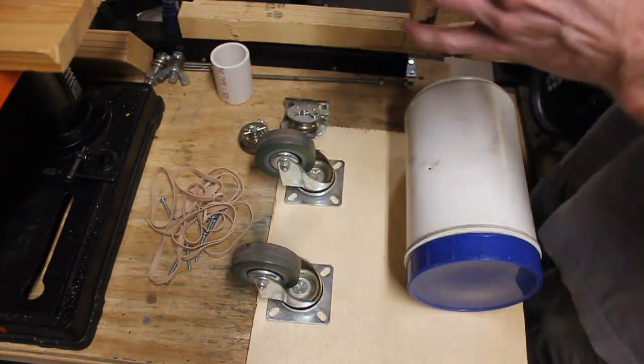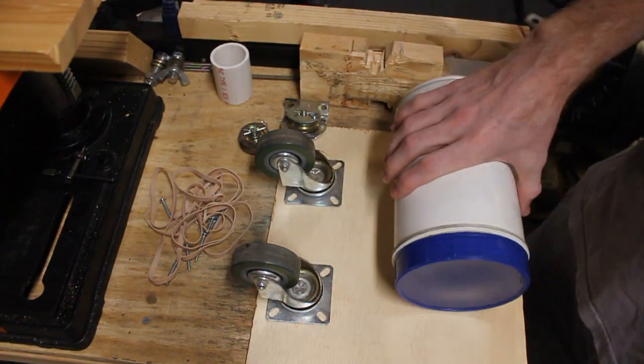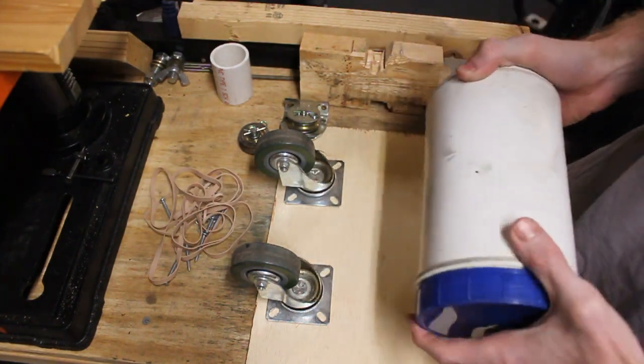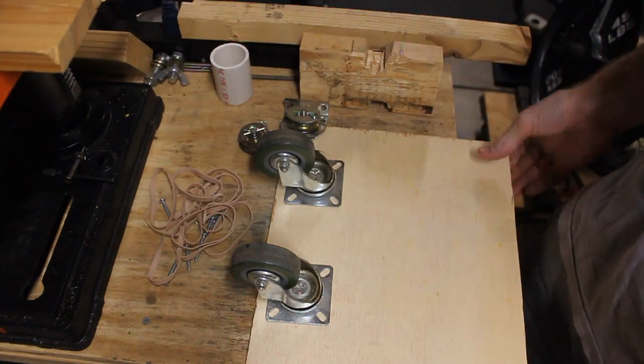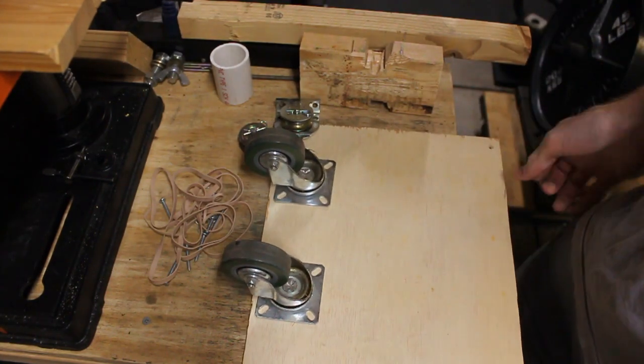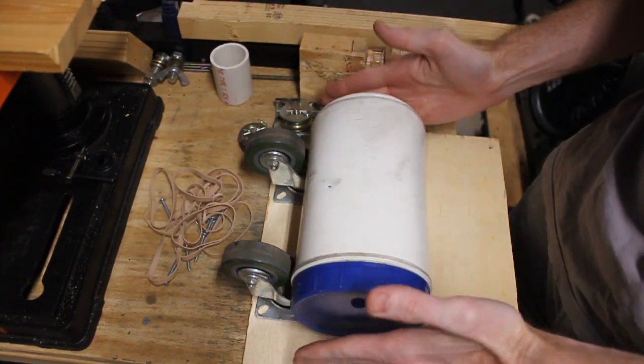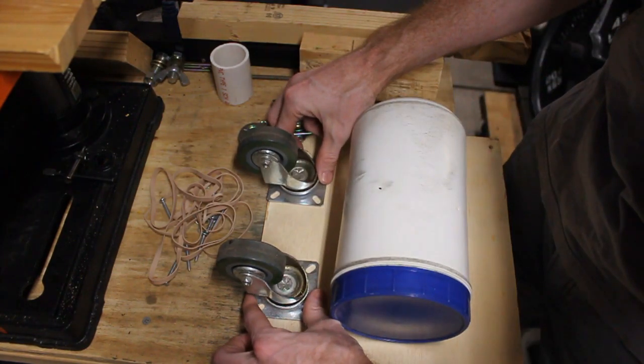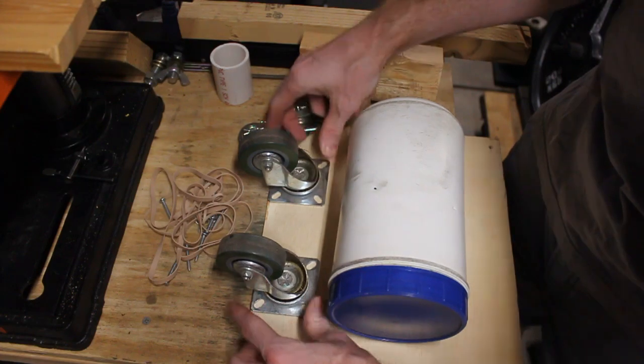So we're going to start off by going over some of the components of this build. You're going to need a container that you'll be putting your knife and your tumbling media in. You will also need two casters along with a piece of wood. So I'm actually using a very thin piece of wood here. I will upgrade that wood later on in the video.